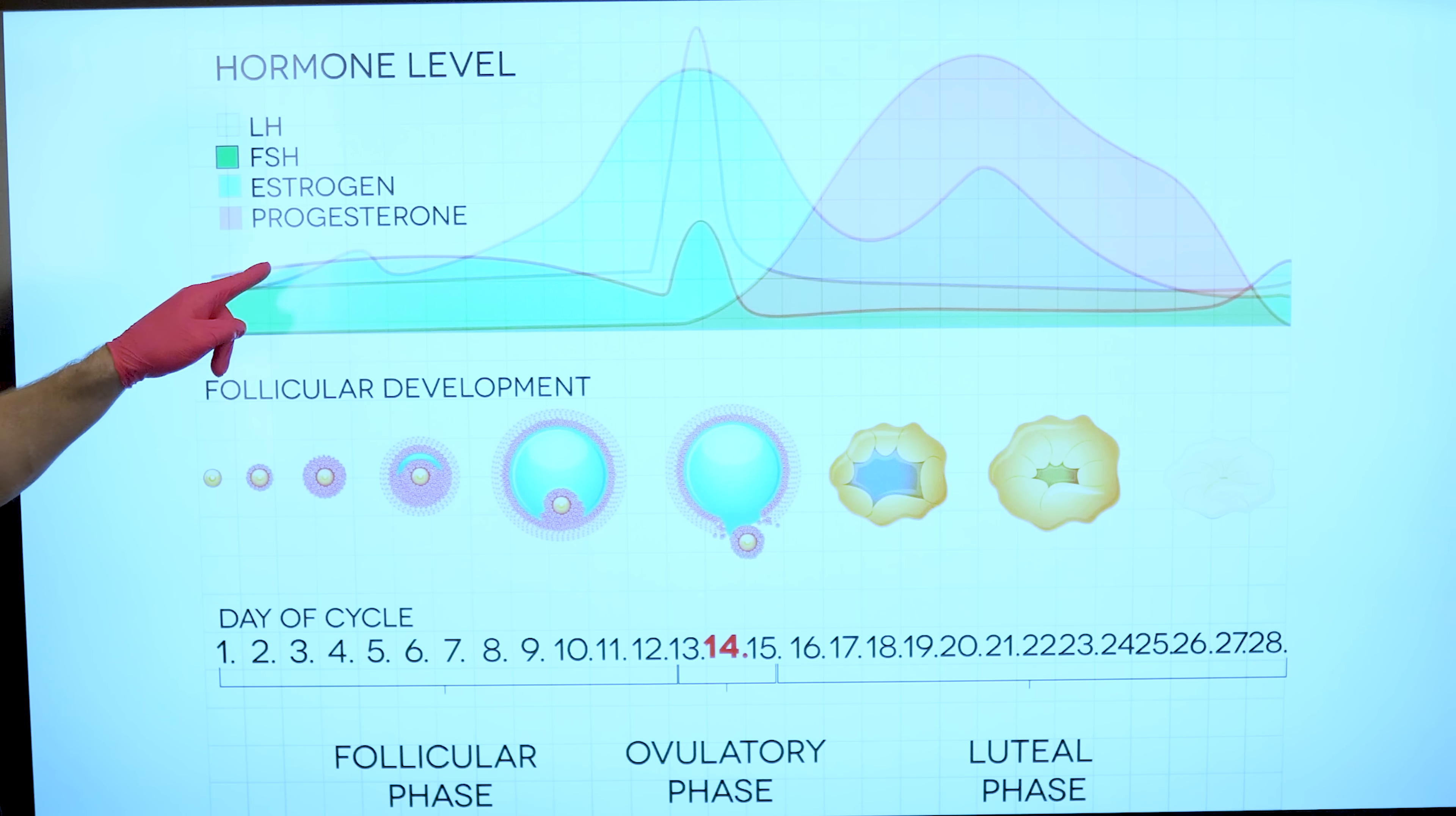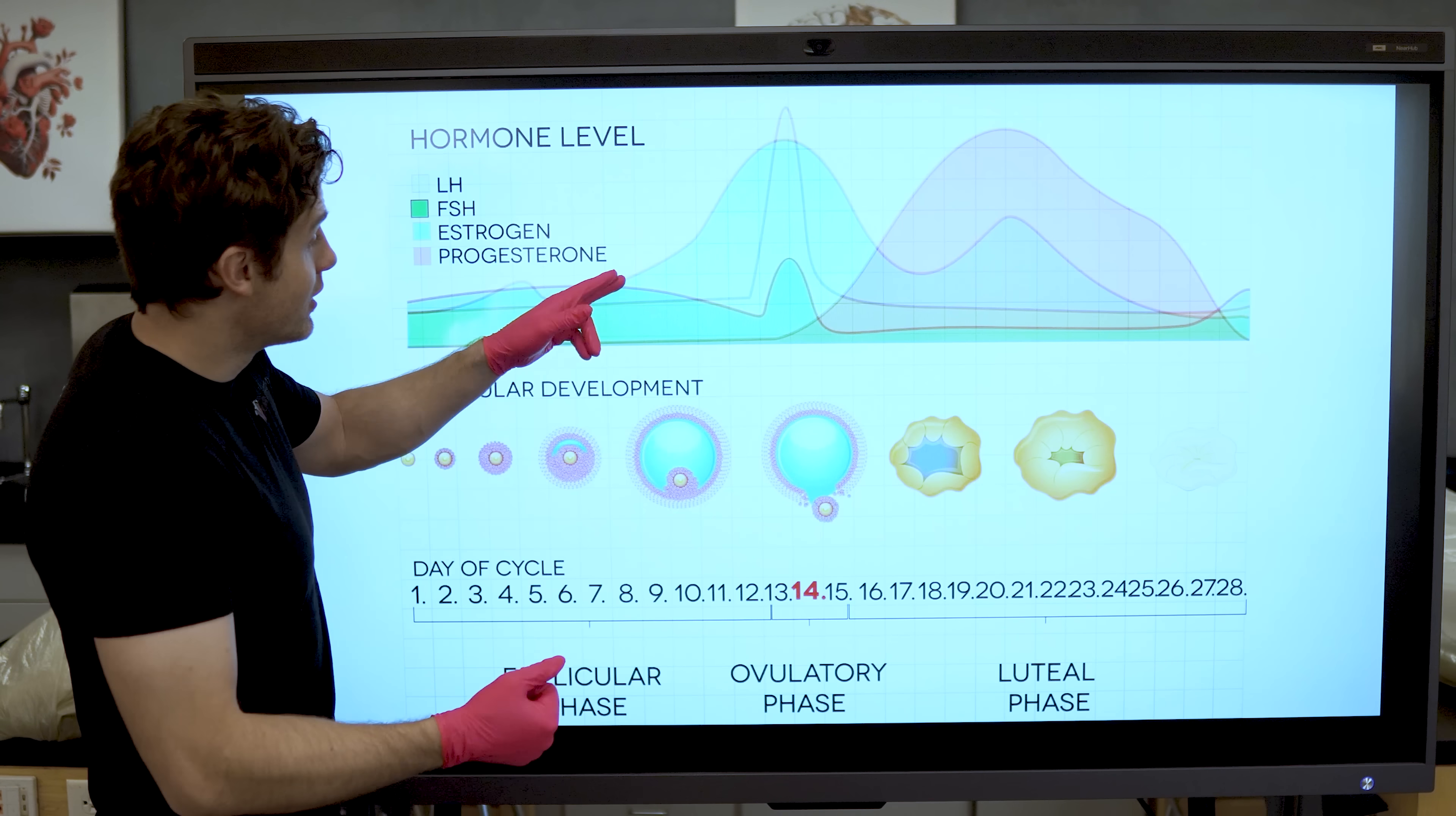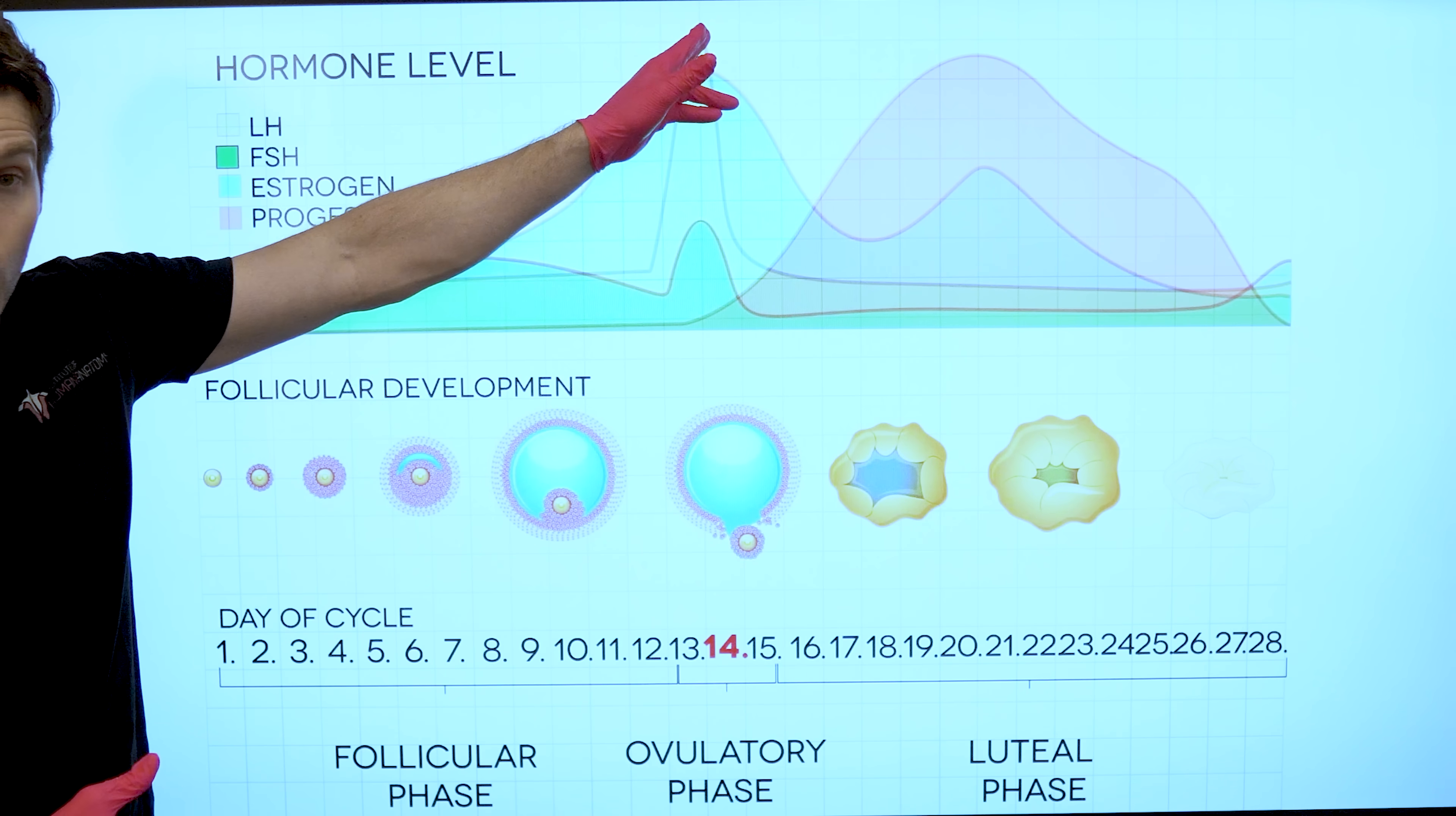But at the same time, we have some changes in estrogen and progesterone. My favorite discussion is to show how estrogen starts to increase right before we have ovulation. Estrogen does a lot of things like secondary sex characteristics, breast development during puberty. But during the menstrual cycle as well, it will potentially increase sex drive or libido. And I always think it's funny to talk about this with my students that it would probably make sense to increase the sex drive of a female prior to releasing an egg. She may be more likely to overlook the shortcomings of her partner. The estrogen just takes over.